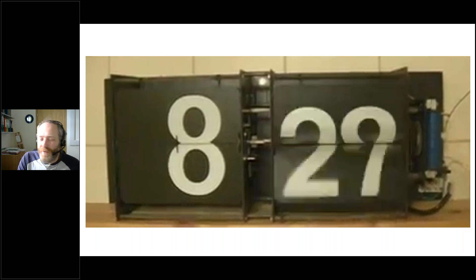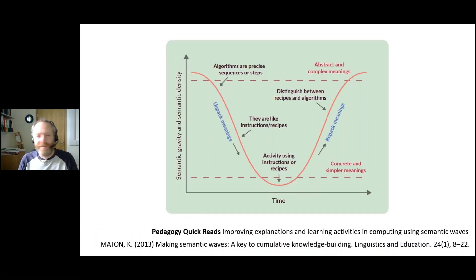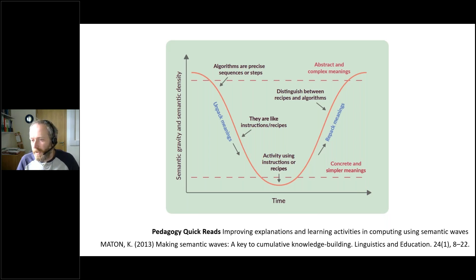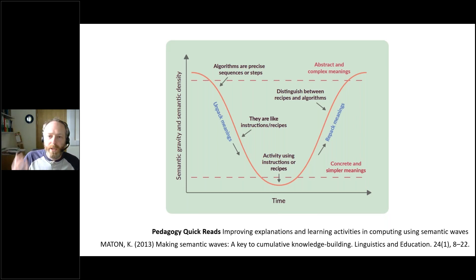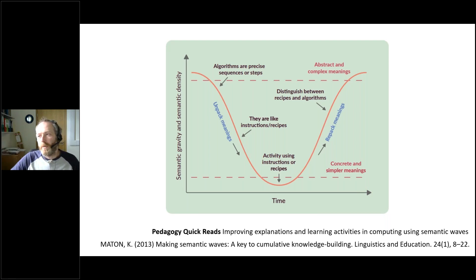This connects to the idea of semantic waves, from Raspberry Pi's pedagogy quick reads. You start with complex ideas and bring them down to very simple ones — for example, algorithms into recipes — but crucially you must bring them back up to abstract and complex meanings, and importantly to new applications, so pupils can constantly refer back to those foundational ideas.